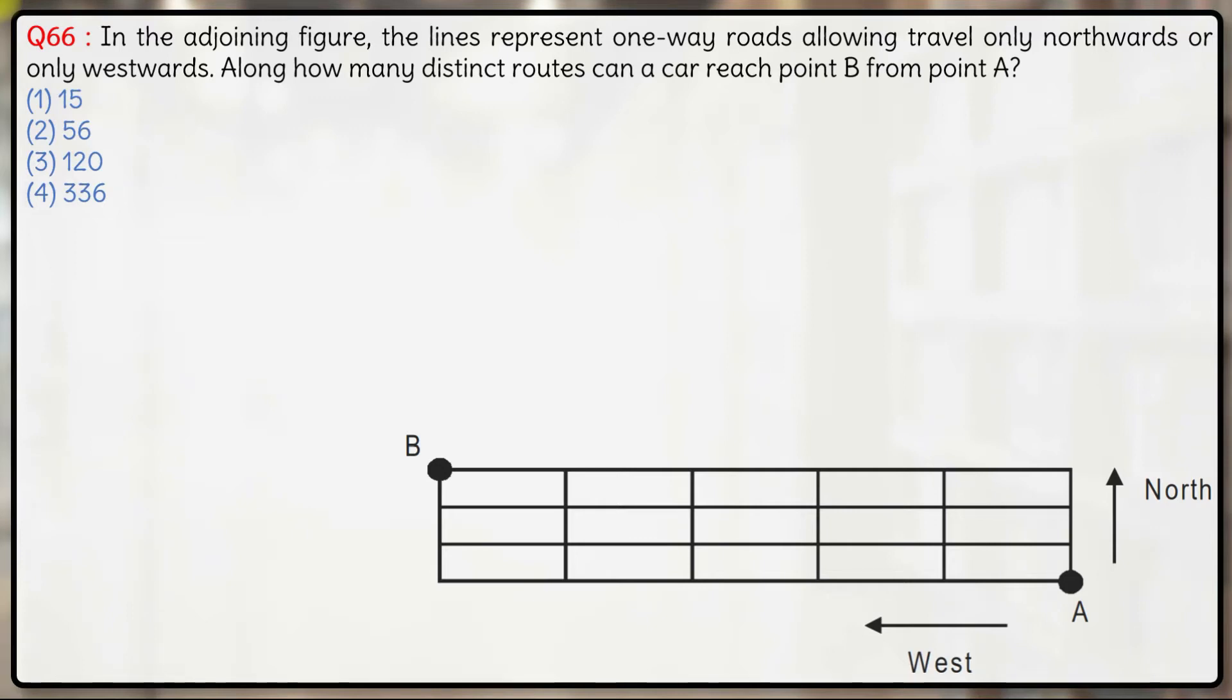Okay, so again a very simple question over here. A person has to go from point A to point B. The person can only travel either northwards or westwards.